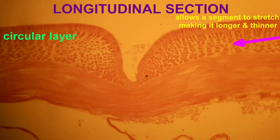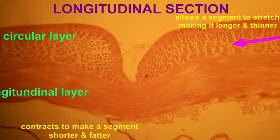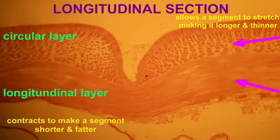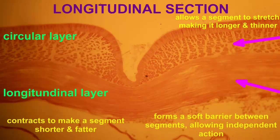Just deep to the epidermis, earthworms possess two layers of muscle: a circular layer and a longitudinal layer.